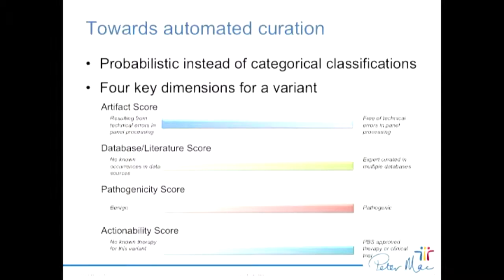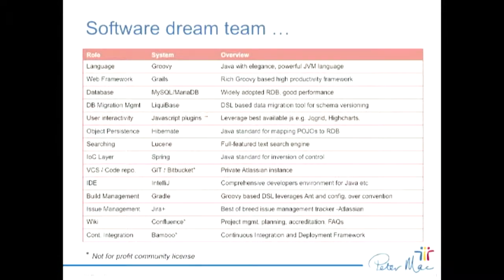The goal is to apply all these different metrics to a particular variant. We want to know whether it's an artifact — just a consequence of the technology — whether it's been seen before in databases or literature, whether it's pathogenic, and whether we can do something about it — its actionability. Our software stack is all public domain, free and open-source except for IntelliJ, which you could replace with Eclipse. We make heavy use of the Atlassian suite — JIRA, Confluence and Bamboo — because we get them under the not-for-profit community licence.